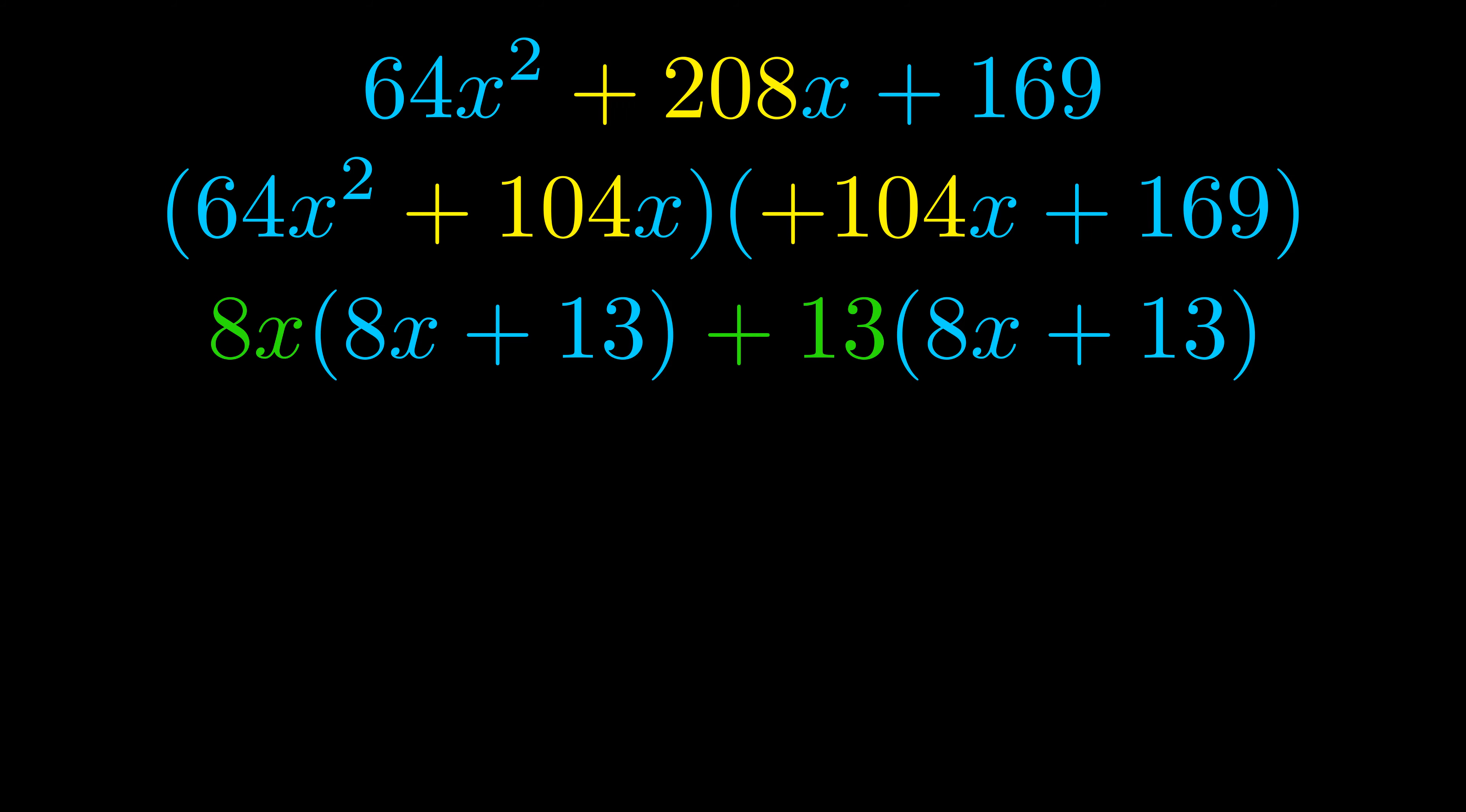Notice also how what remains inside of the parentheses is the same in both cases. The blue values are the same. Those blue values will become one of our factors and we will combine the two green values, the GCFs that we pulled out, to get the other one. And that is our fully factored equation.